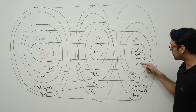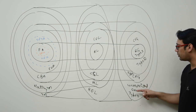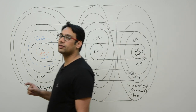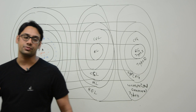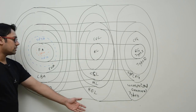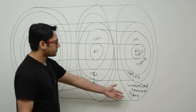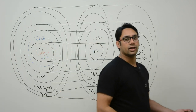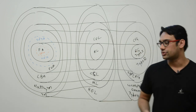This type 3, type 2, type 1, and type 0 classification is given by Sir Noam Chomsky. So this is also called the Noam Chomsky classification of grammars.